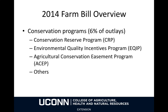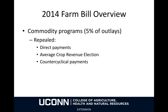About 6% of expenditures under the 2014 Farm Bill go for conservation programs such as the CRP, EQIP, and ACEP. Under the 2014 Farm Bill, some of the main commodity programs were repealed, including direct payments, average crop revenue election, and counter-cyclical payments.